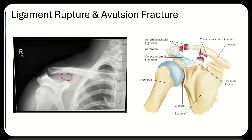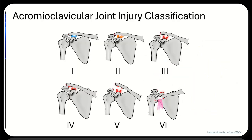An AC joint separation is the most common way to damage the coracoid process. On the radiograph, we can see the separation between the clavicle and the acromion of the scapula. However, look more closely above the coracoid process and you can see a tiny bone fragment. This is an avulsion fracture where the coracoclavicular ligament tore and took some bone with it. While we're looking at these structures, we should address the grading of the injury to the acromioclavicular joint, which is the Rockwood classification system.